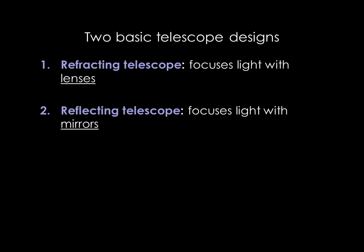Telescopes come in two basic designs, refracting and reflecting. A refracting telescope uses transparent glass lenses to collect and focus light. A reflecting telescope uses mirrors.